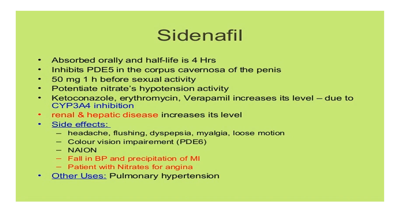The first drug is sildenafil. Its mechanism of action is inhibiting the enzyme phosphodiesterase 5 in the corpus cavernosa of the penis, thereby maintaining smooth muscle relaxation. It is absorbed orally with a half-life of 4 hours, given as 50 mg one hour before sexual activity. It will potentiate nitrate-induced hypotension. It is metabolized by cytochrome P450 3A4, so inhibitors like ketoconazole, erythromycin, and verapamil will increase sildenafil blood levels.